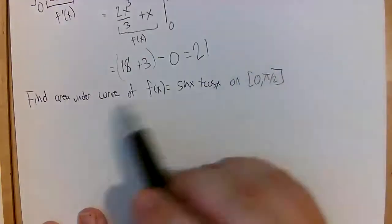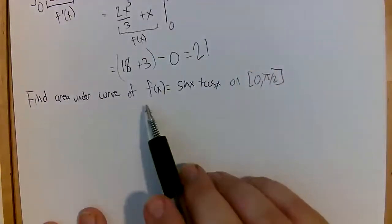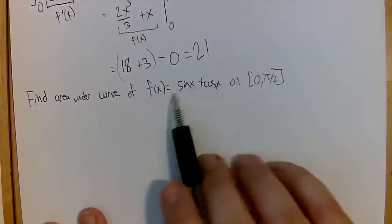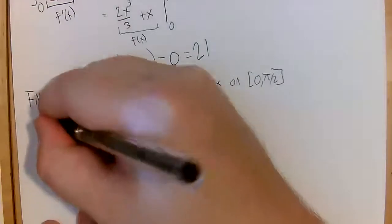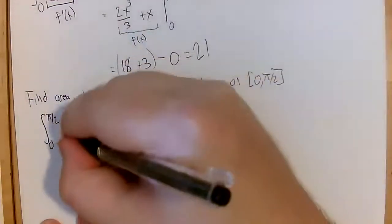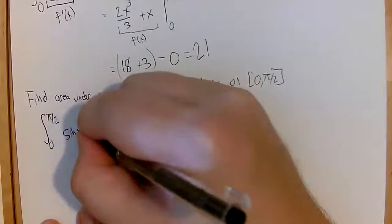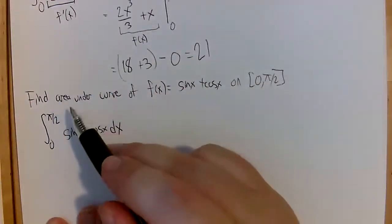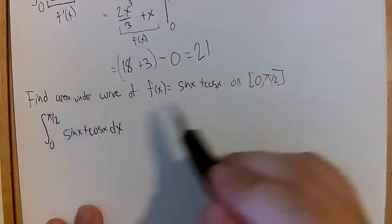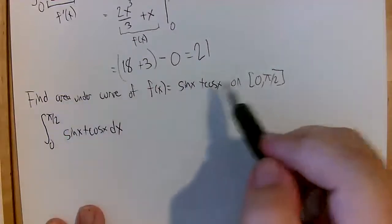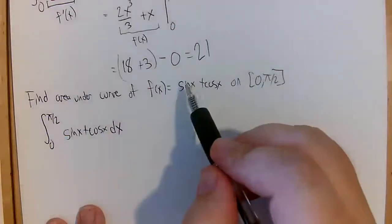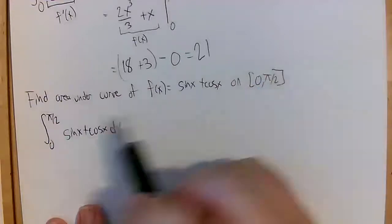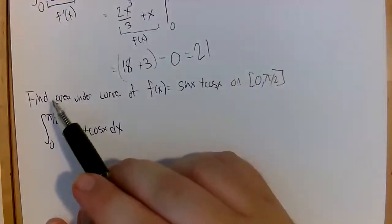The signed area under the curve will be the definite integral from zero to pi/2 of sine of x plus cosine of x. Signed area and actual area are the same for this problem because this function is positive on the interval zero to pi/2 — both sine and cosine are individually positive from zero to pi/2, so I don't need to worry about the sign.